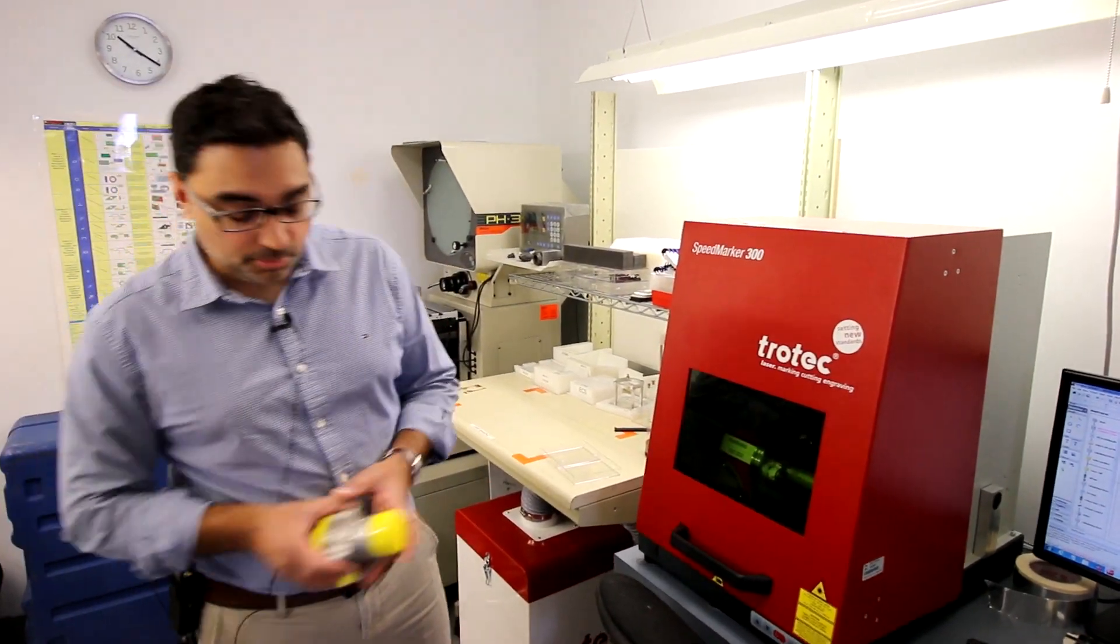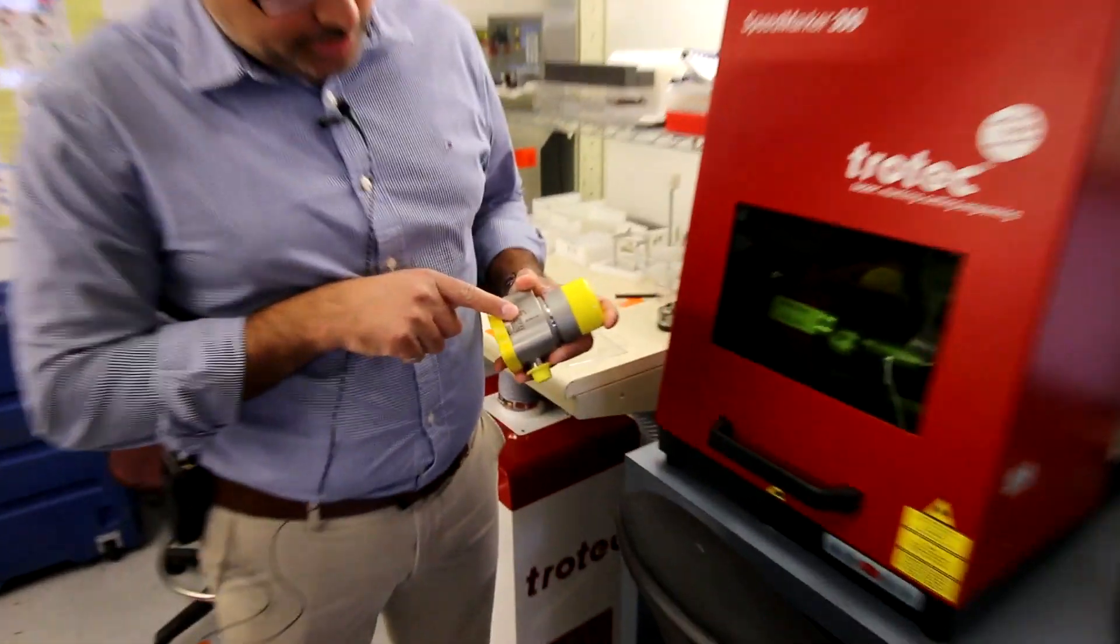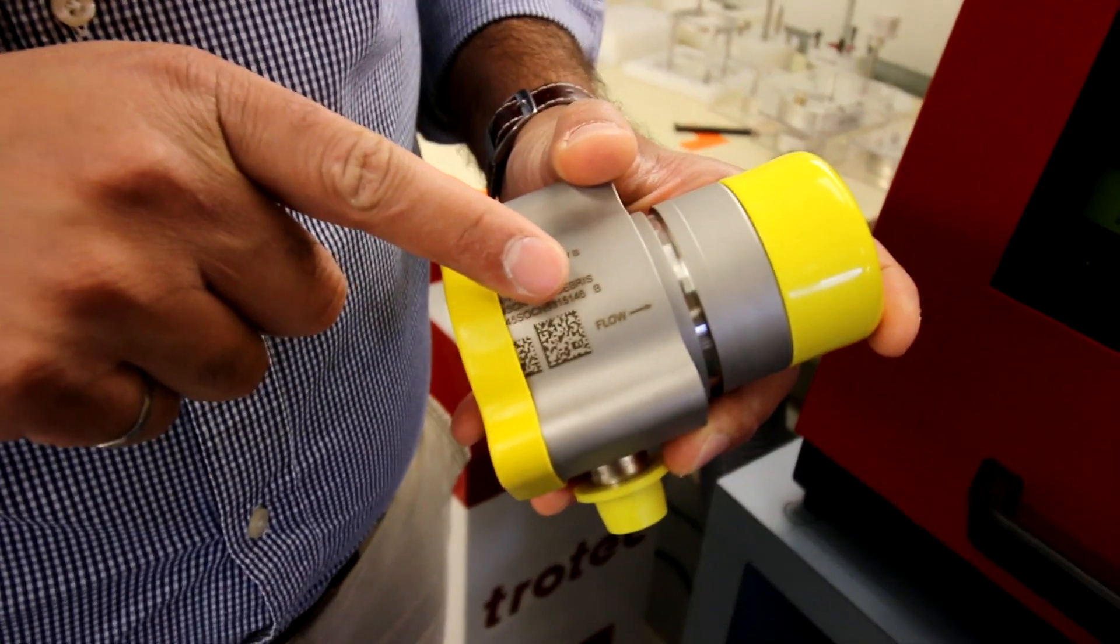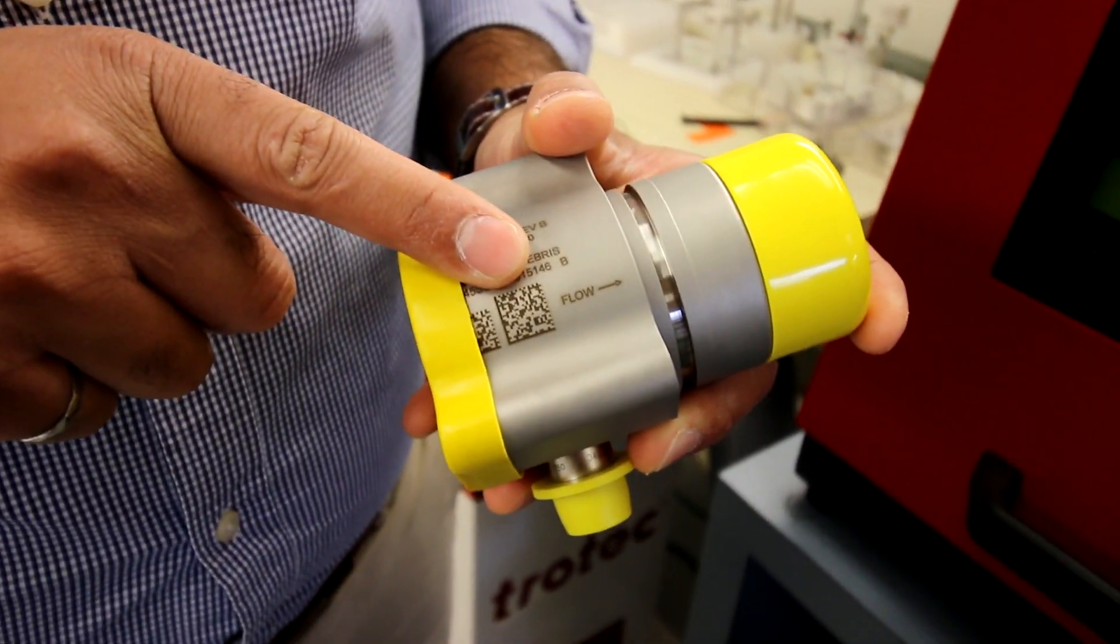This is where we do our part marking. We mark our sensors for the part number, the customer's part number, and we also use a UID barcode part marking. That makes it more convenient for our customers to scan the part into their system.